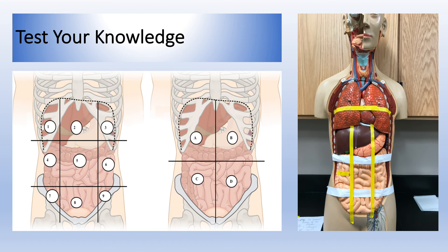Let's test our knowledge. You see a photo of the anatomical model we use in labs and an illustration labeled with number four. The same region labeled number four appears on the anatomical model as well. What is the name of this region — one of the nine regions? We call it right lateral or right lumbar region. Did you notice? It's the patient's right, not our right.